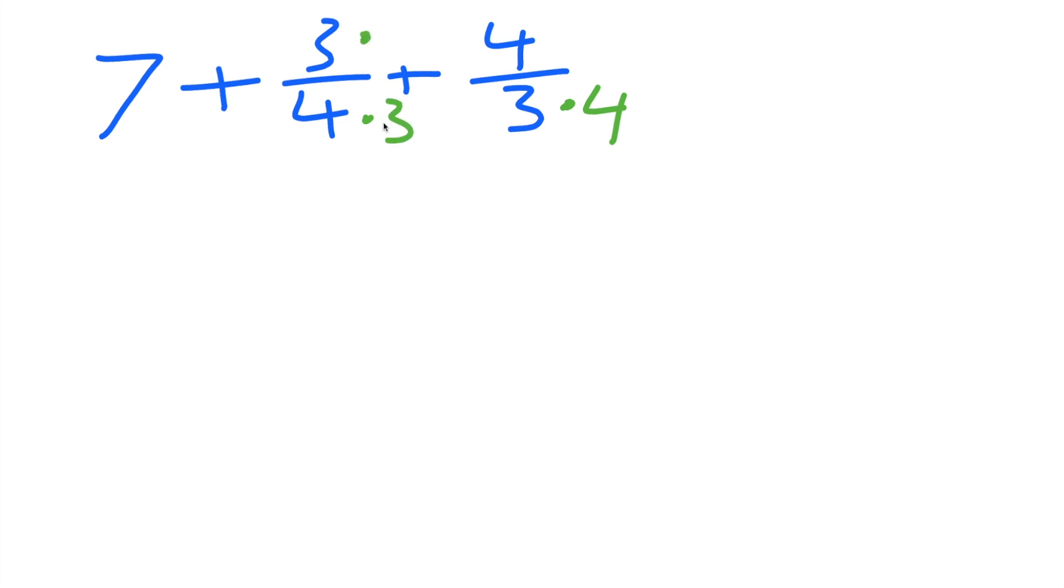So if I times this by 3, I've got to times the numerator by 3, and if I times this piece by 4, I've got to times this numerator by 4. So let's bring this down. We have 7 plus, so 3 times 3 is 9, divided by 4 times 3 is 12, plus 4 times 4 is 16. And 3 times 4 is 12.